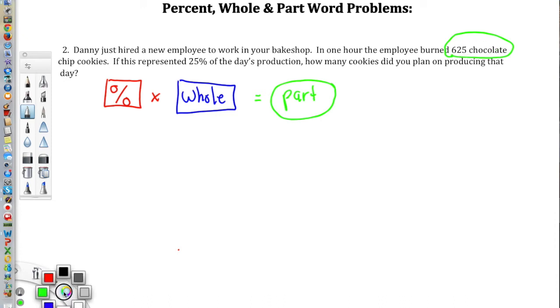And we know that that represents 25% of our total cookies, which is the day's production. So that's the unknown. We've got the part, we've got the percent. We just need to figure out the whole, which is the day's production. So let's set this equation up.